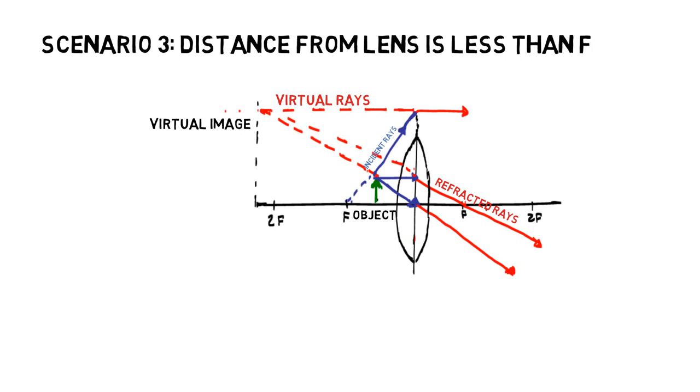Well this is due to the fact that real images are formed by the intersection of refracted rays, known as converging rays. But in this scenario, as you can see, the refracted rays actually don't converge. But because we know that light travels in straight lines, we can actually trace back to the point where the rays actually diverge from, which is the point where the virtual image is created.